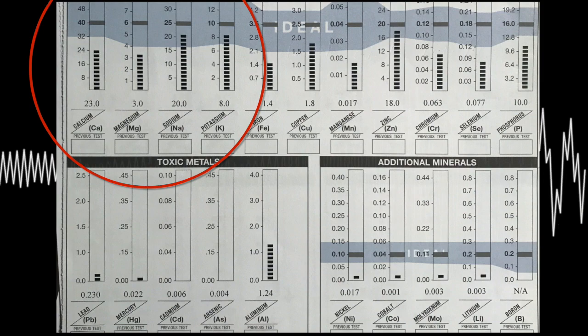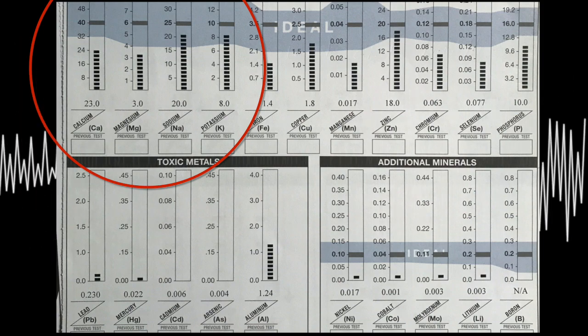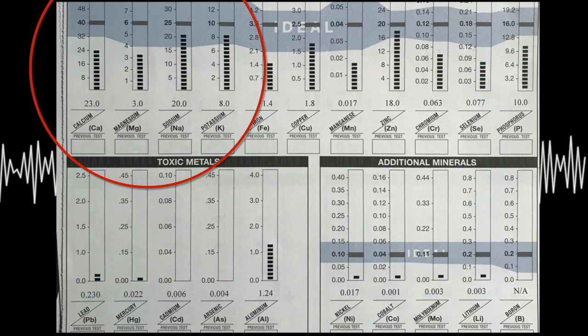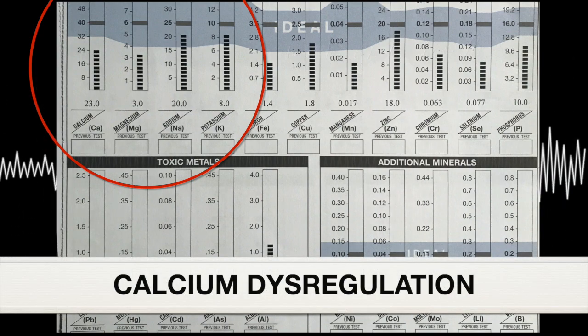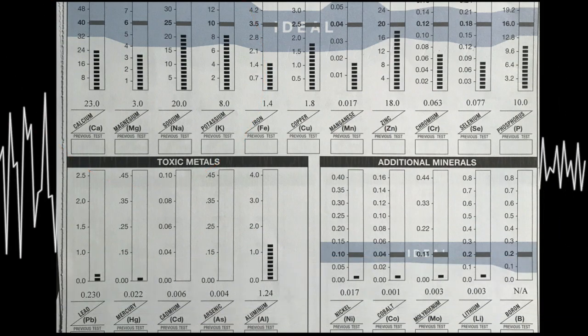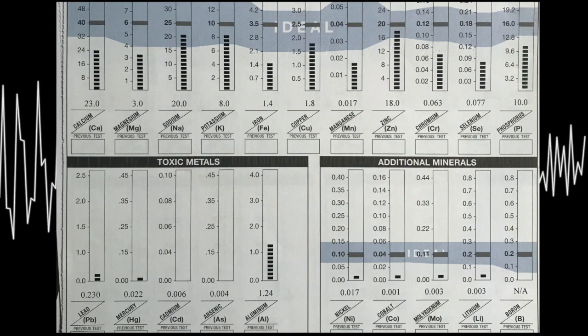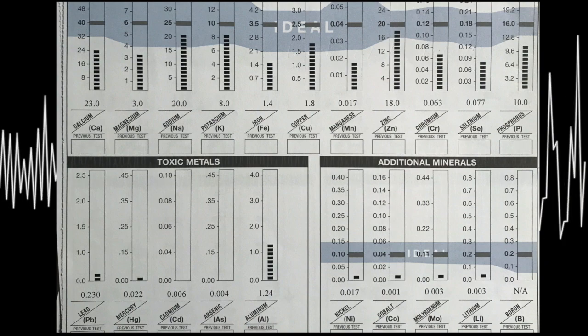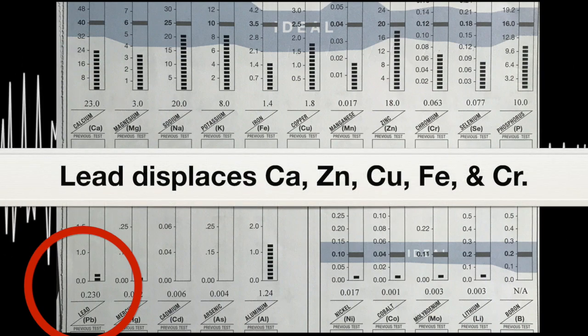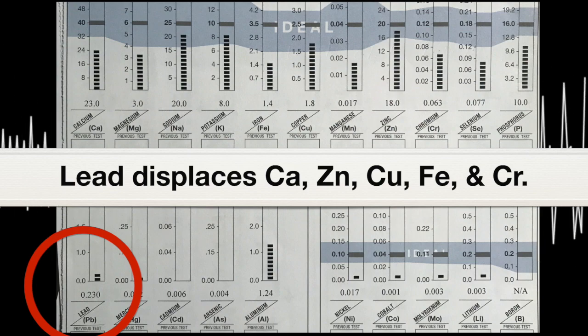And behind the four low pattern, there's many etiologies. There's psychological, there's emotional, there's absolute physical stuff. But the number one thing with a four low pattern is calcium dysregulation. Something is causing calcium to be dysregulated in her. And so one of the main culprits for causing calcium dysregulation, not the only thing, but it's a main one, is the metal lead. Lead displaces calcium. Lead also displaces zinc. It displaces copper. It displaces iron and chromium. So lead is enemy agent number one.